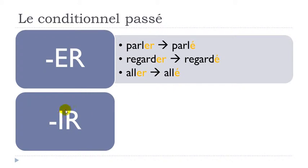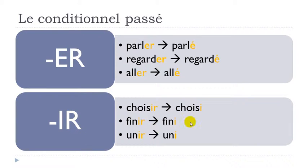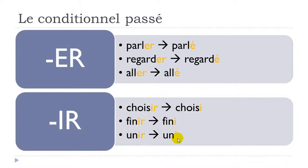For second-group verbs — regular -ir verbs — the rule is also easy: drop the -r to get -i. For example, choisir becomes choisi, finir becomes fini, unir becomes uni.